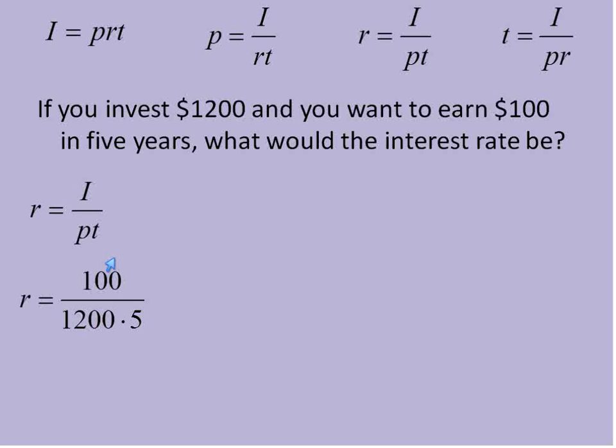The interest I'm trying to earn is $100, so that's going to be up top. My principal amount, how much I'm investing, is $1,200, and the time is five years. When we multiply that out, we get 0.0167.